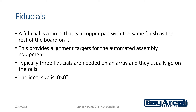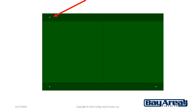A fiducial is a circle that is a copper pad with the same finish as the rest of the board. This provides alignment targets for the automated assembly equipment. If they are needed on an array, typically three of them are used. The ideal size is 0.050 inches. Here's an example of an array with three fiducials on the rails.